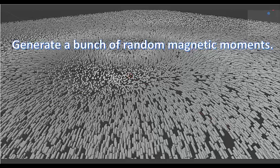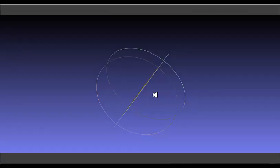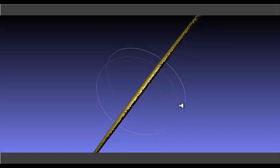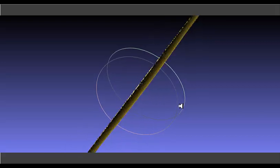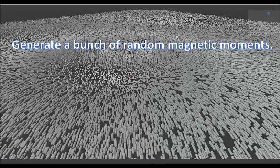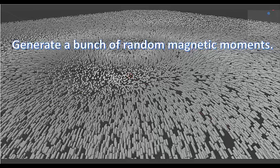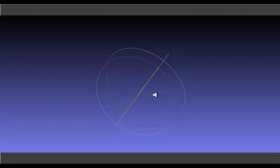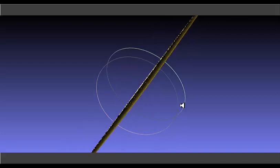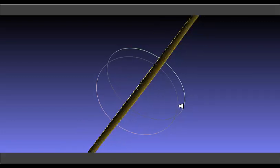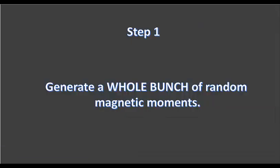These magnetic moments simulate the nanoparticles between the two pieces of glass or plexiglass. We need to generate a whole bunch of magnetic moments in a thin layer that would represent the nanoparticles between the two pieces of glass.